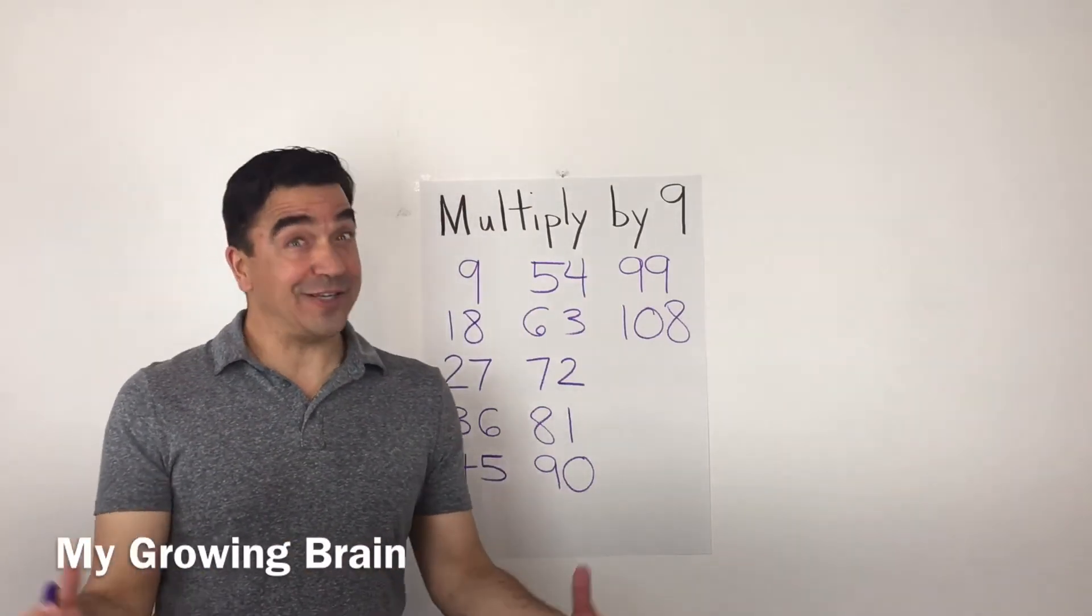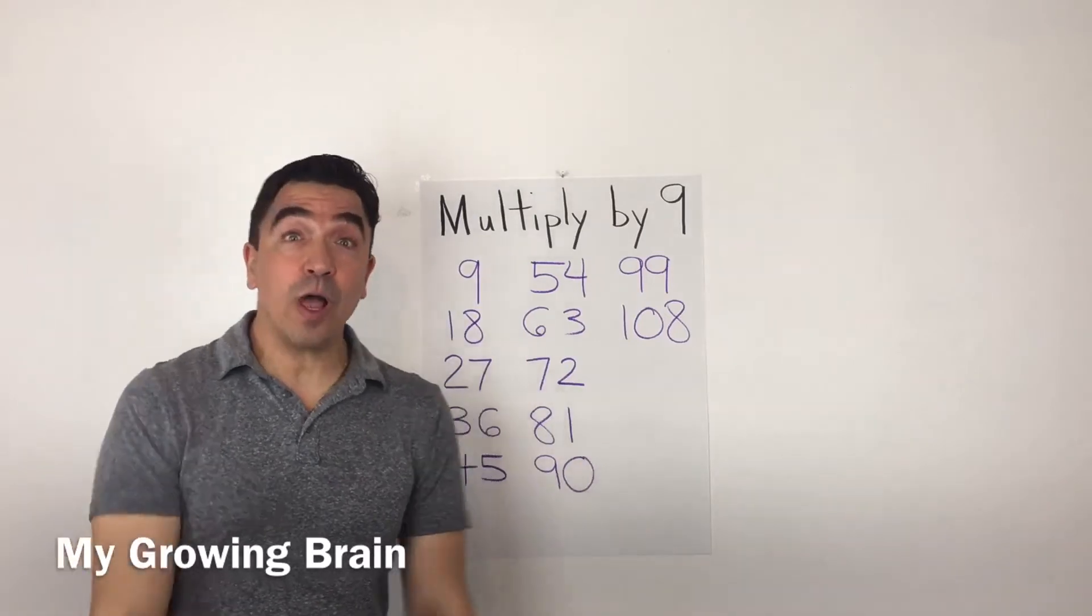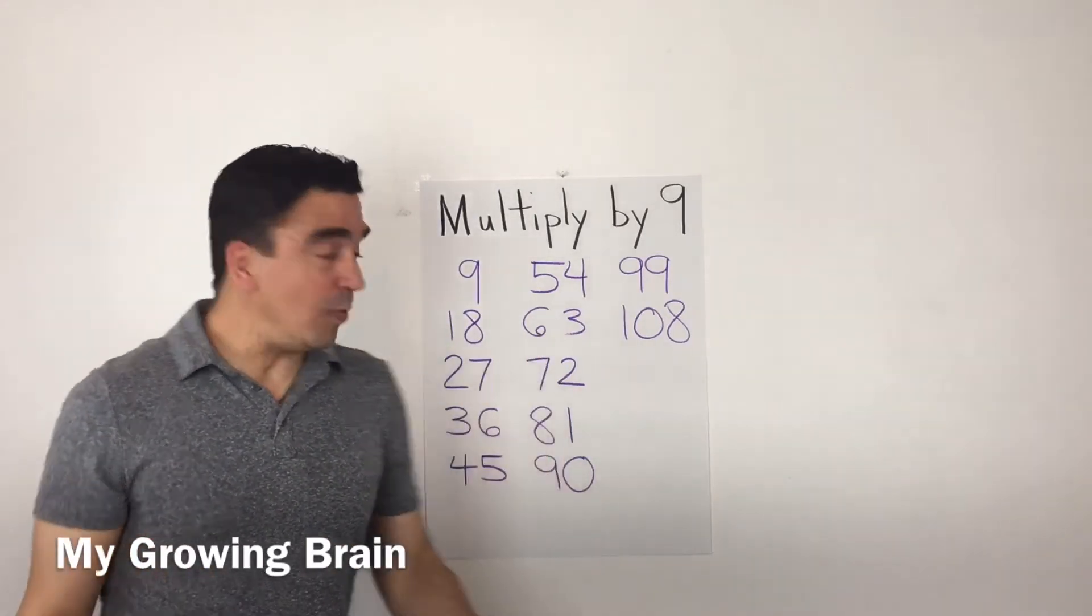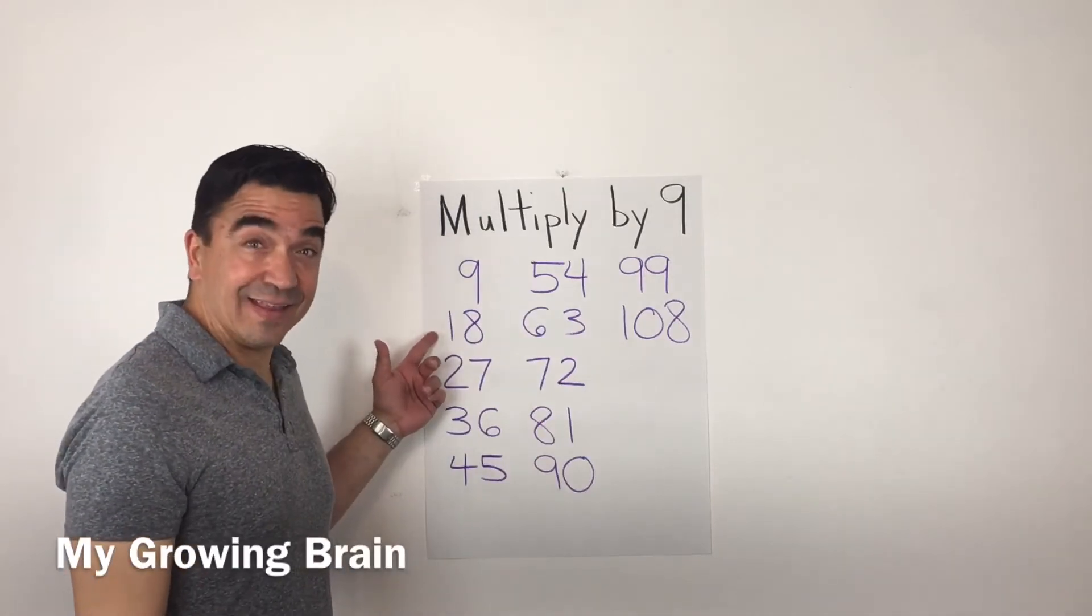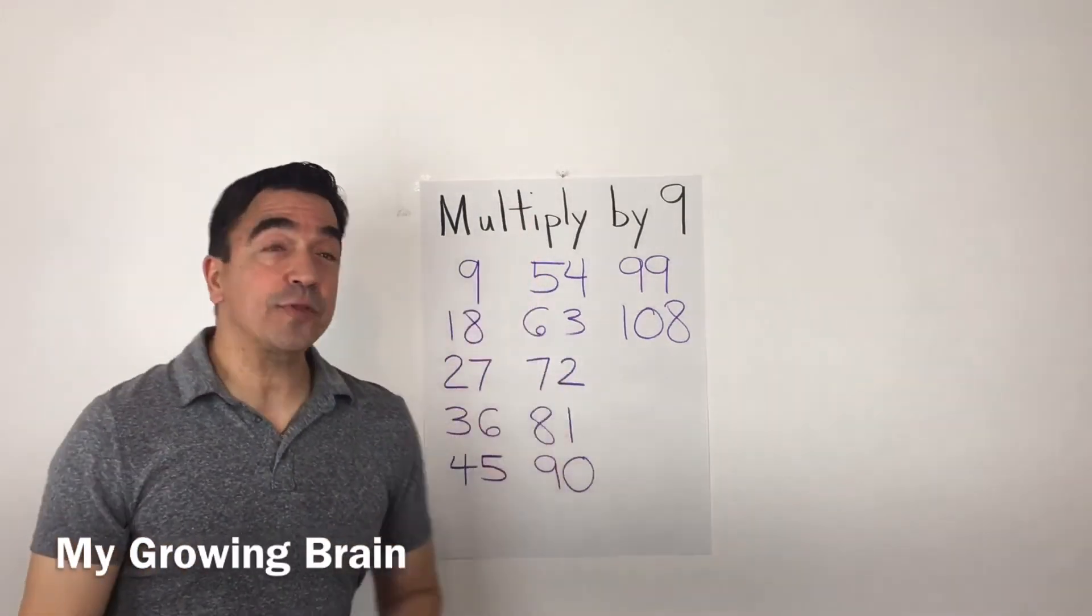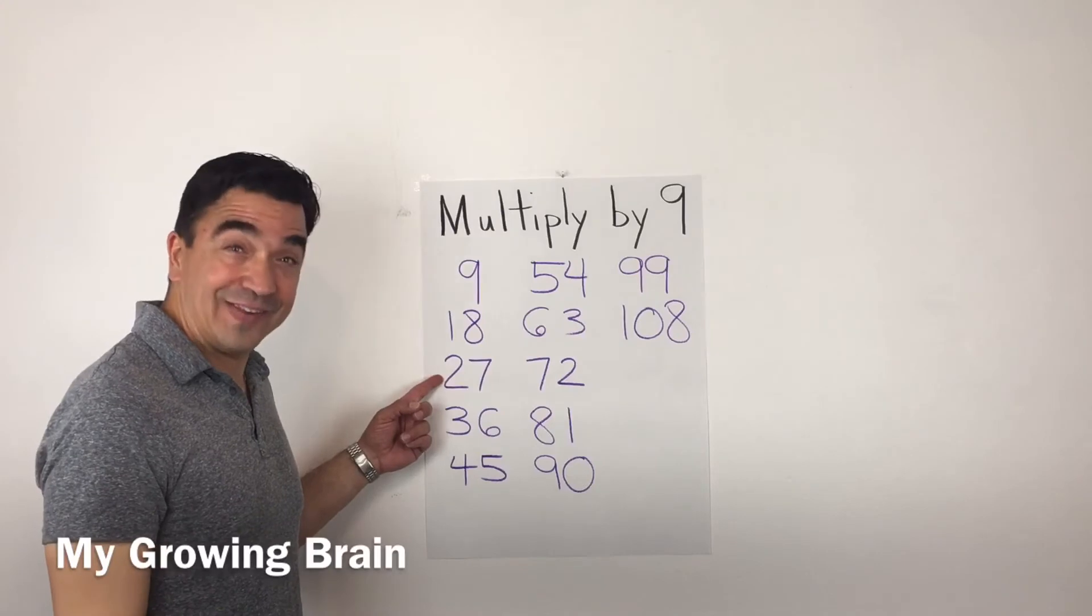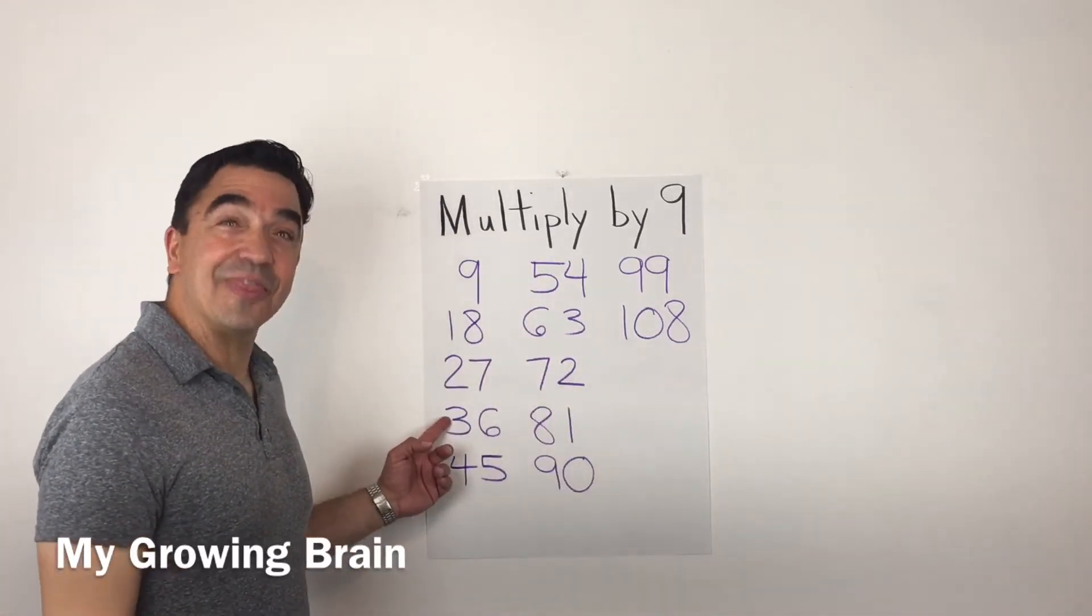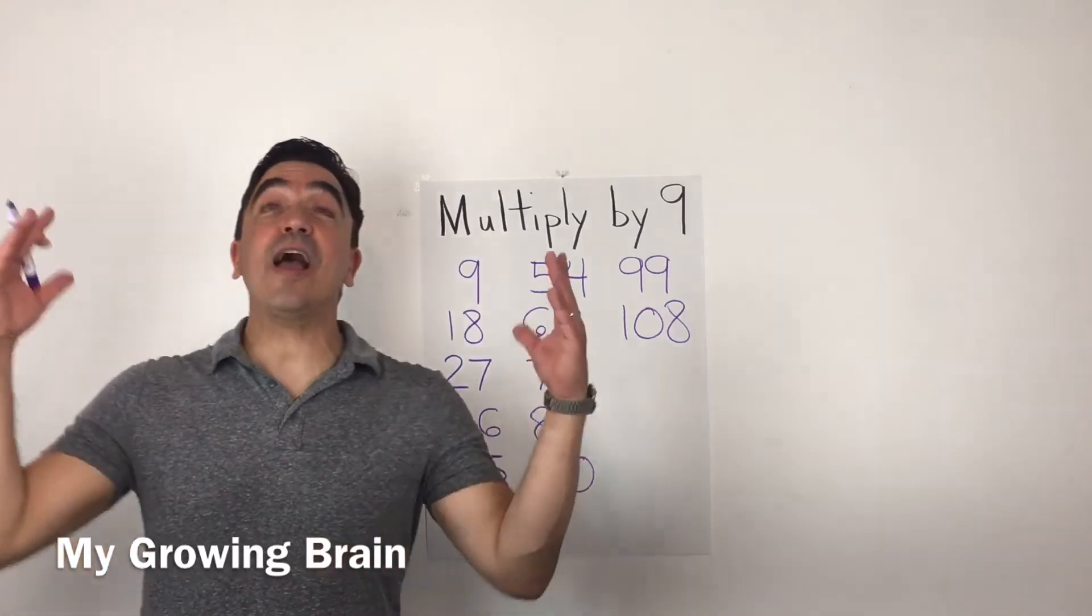All right. Watch this. Nine times one, nine. Nine times two, eighteen. Nine times three, twenty-seven. Nine times four, thirty-six. Nine times five, forty-five.